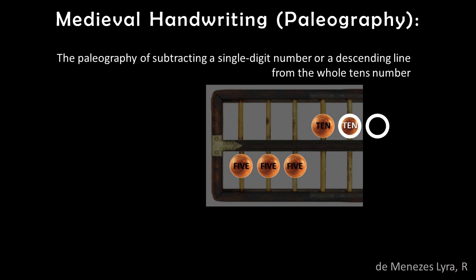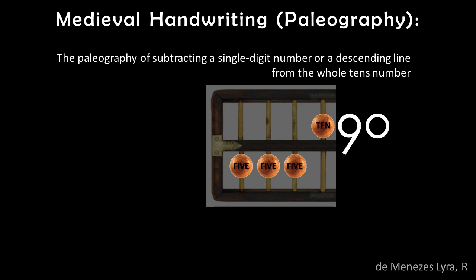These beads also have the value of 10, and this is the paleographic way the digit 9 is written. The first step is the circling of a bead with a value of 10, but this value can be decreased by the addition of a downward slanting line. So the medieval handwriting subtracts a single digit number, or a descending line, from the whole 10's number.